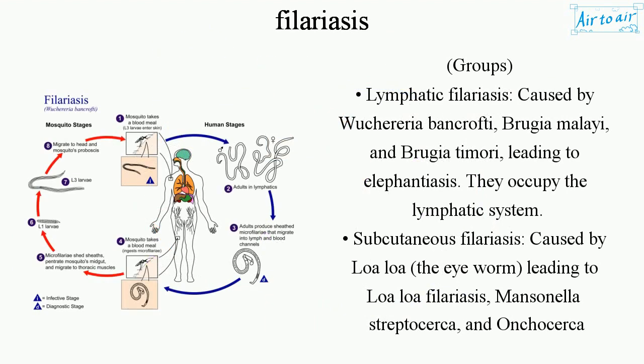Groups. Lymphatic filariasis, caused by Wuchereria bancrofti, Brugia malayi, and Brugia timori, leading to elephantiasis. They occupy the lymphatic system.